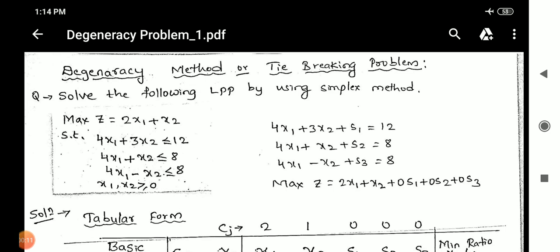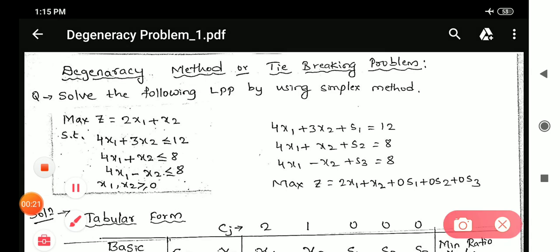In this video, I am going to explain what is degeneracy method or tie-breaking problem. The question will be solve the following LPP by using simplex method. The example is max z equals 2x1 plus x2 and there are three constraints.